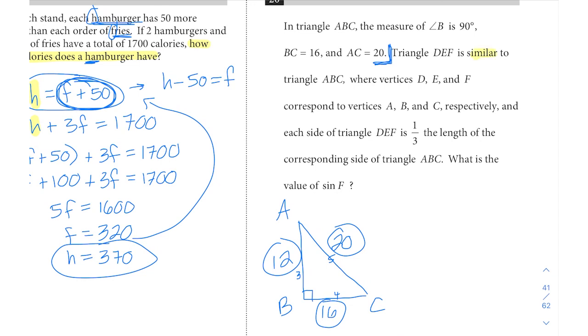Triangle DEF is similar. Keyword here: similar. Let's talk about what that means. When they say similar, all that means is that the angles are going to be the same. It can be bigger or smaller, but each of the angles is going to match up in the order that those points are written. ABC is similar to DEF means D corresponds with A, E corresponds with B, and F corresponds with C.